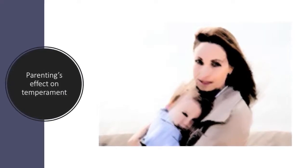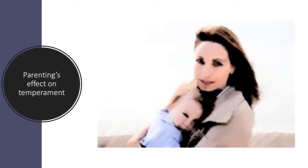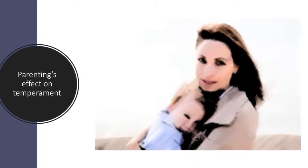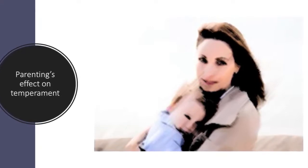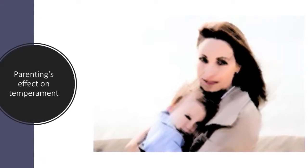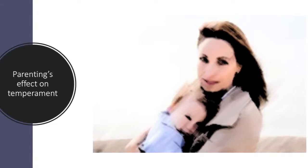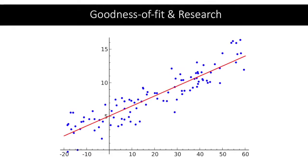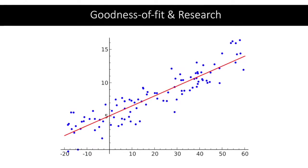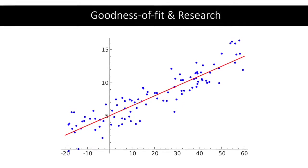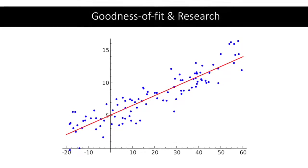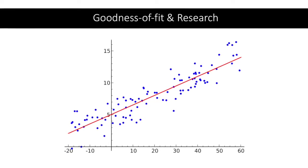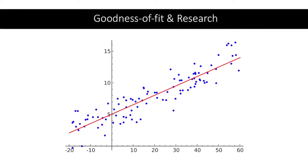Other variables also influence parenting and temperament, acting as moderators — for example, the age of the parent or child, their gender, the parent's characteristics, and social and cultural factors. Through research, we aim to look at the goodness of fit, or the extent to which an individual's capacities, motivations, temperaments and abilities are matched to environmental demands and expectations caused by the parent or culture.